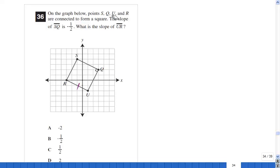On the graph below, points S, Q, U, and R are connected to form a square. The slope of SQ is negative one half. What is the slope of UR?